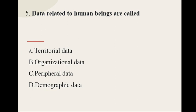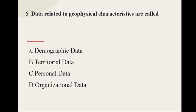Question number five: Data related to human beings are called — options are territorial data, organizational data, peripheral data, and demographic data — and the correct option is demographic data.